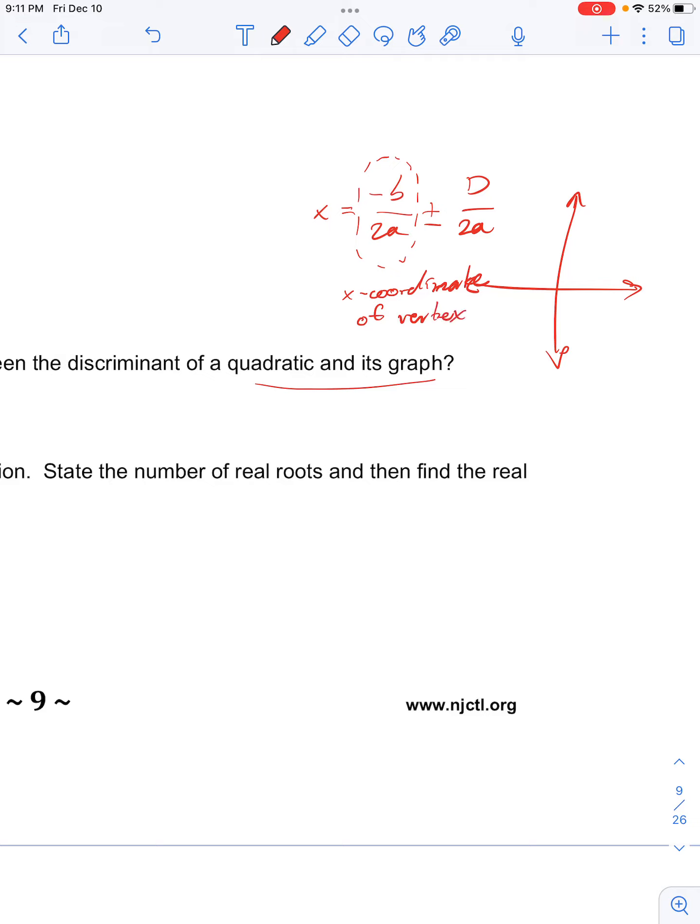then this plus or minus discriminant over 2a is our x-shift for the two x-intercepts. So, if we had our axis of symmetry here and a vertex located here,